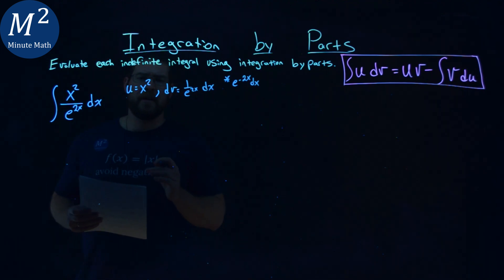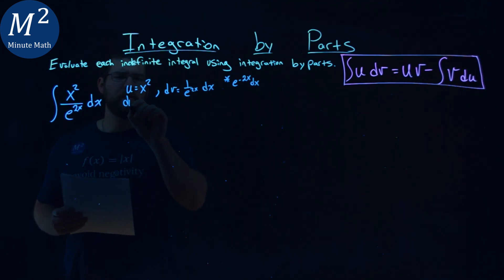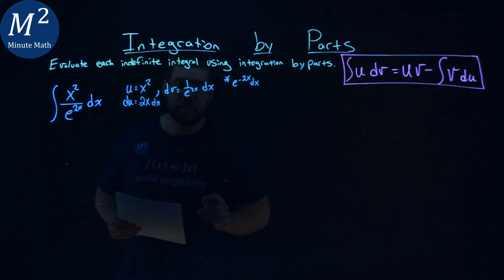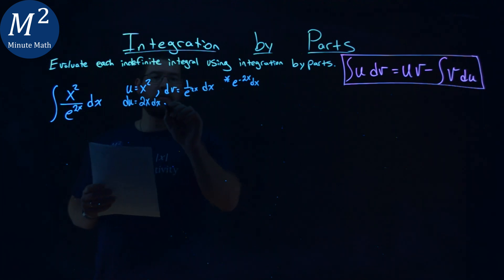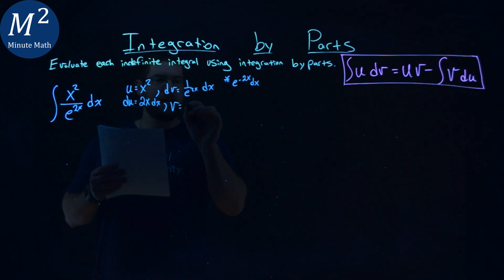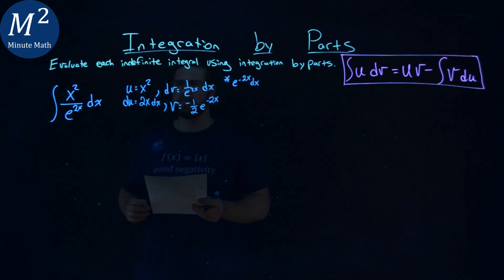Well, we have this all set up now, so let's go find a du value first. Derivative of x squared is 2x dx. The integral of our dv value, so the integral of e to the negative 2x, that's why I write it like that. So our v value is negative 1 half e to the negative 2x power, right there.